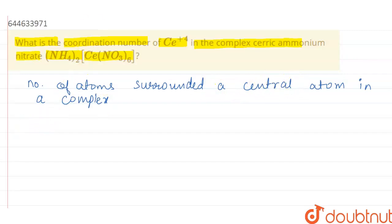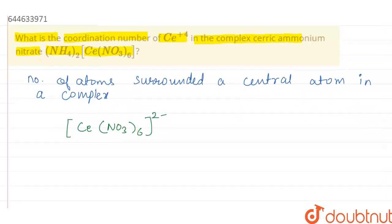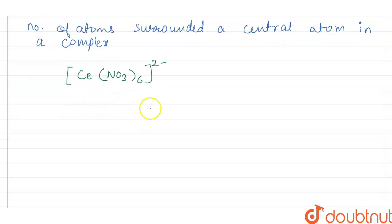So we have complex cerium ammonium nitrate, and we can also write this as [Ce(NO₃)₆]²⁻. For coordination, let's draw the structure of this complex.